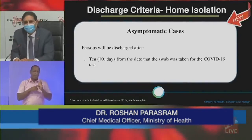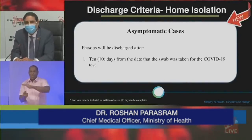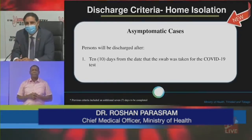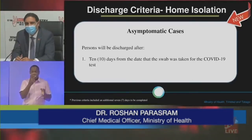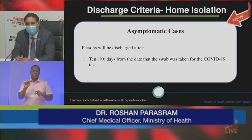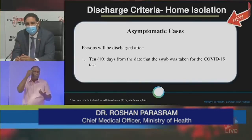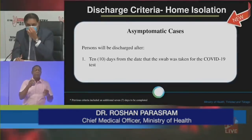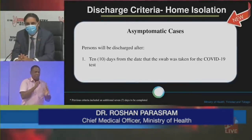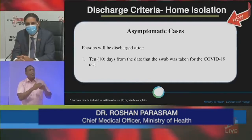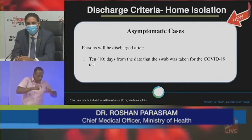If symptoms do develop, please notify your CMOH immediately and arrangements will be made for COVID-19 testing thereafter. What has changed is the discharge criteria for home isolation and for isolation in general. We broke it down into two broad categories, based on local and international data as well as vaccination coverage in the country. For asymptomatic cases, persons will be discharged after 10 days from the date the positive sample was taken — that is persons who never had symptoms at all.